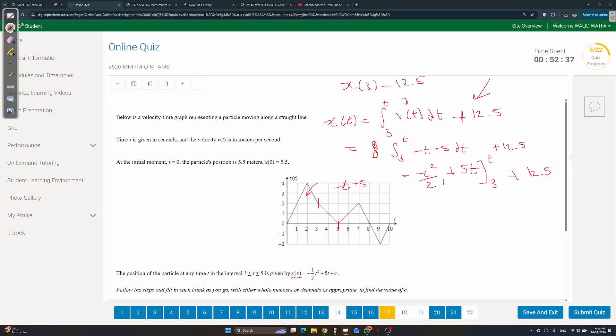Negative t squared over 2 plus 5t, from 3 to t, plus that 12.5 on the side. Substitute t with t, you get the same thing. So you're going to get negative t squared over 2 plus 5t, minus open bracket. Now substitute 3: negative 3 squared over 2 plus 5 times 3, plus 12.5.